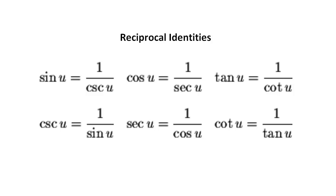To verify identities, we need a lot of information in our toolbox, and you already know a lot of things. One group is called the reciprocal identities: sine equals 1 over cosecant, cosecant is 1 over sine, cosine is the reciprocal of secant, secant is the reciprocal of cosine, and tangent and cotangent are also reciprocals.